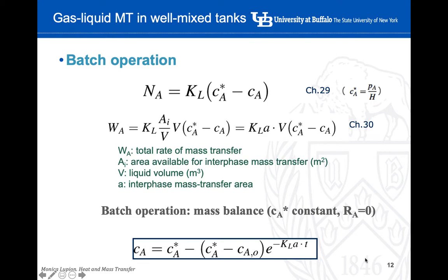In batch operation, we study the equations once the concentration has reached a stable number — we define this as steady state, with no dependence on time. This is what we call permanent conditions in chemical engineering. Once we reach these stable conditions, we apply the convective mass transfer equation: the molar flux of A is equal to the overall convective coefficient in the liquid times the delta concentration, which is the driving force.